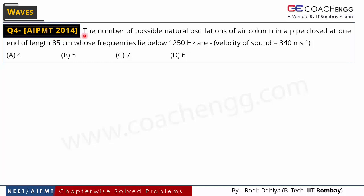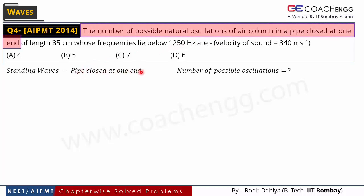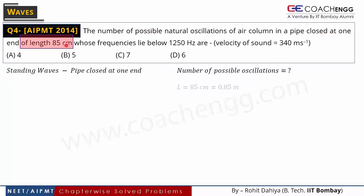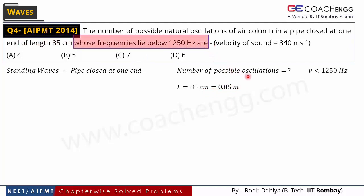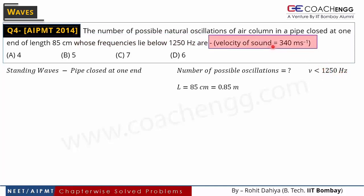Now we discuss the AIPMT 2014 problem: the number of possible natural oscillations of an air column in a pipe closed at one end. The pipe closed at one end is given, and we need to discuss the oscillations of the air column inside — i.e., the standing waves. The pipe length is 85 cm (0.85 meters). We need the oscillations whose frequencies lie below 1250 Hz. The velocity of sound is 340 meters per second.